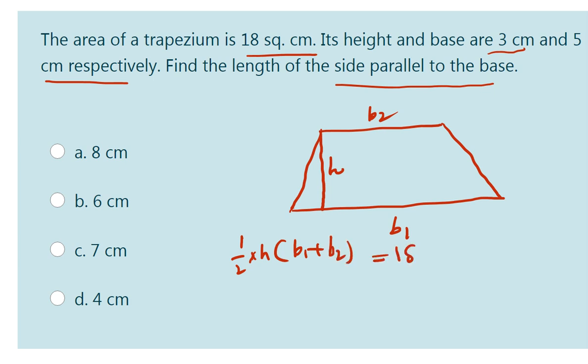So it has been given as 18 square centimeters. Now we know the B1 value. They have given the height as well as the base. Height is 3 centimeters. It is half into 3 into, and base is 5 centimeters, 5 plus. We don't know B2. They ask you to find out the side parallel to the base, that is B2. That is equal to 18.